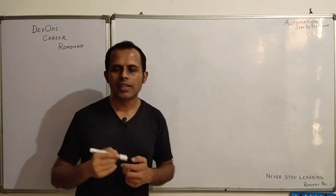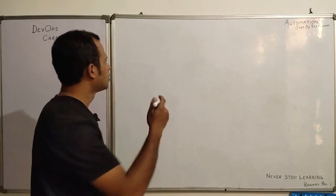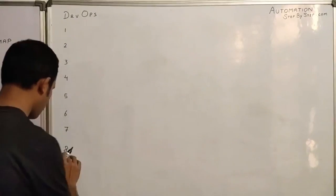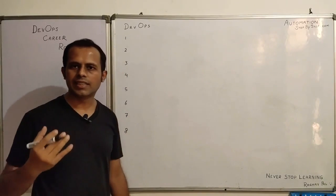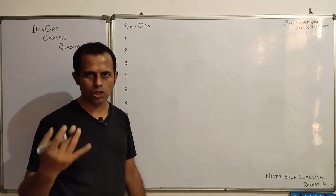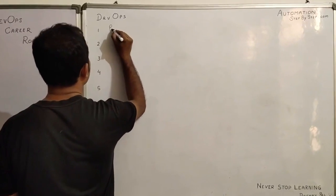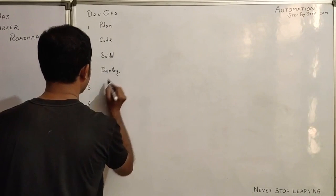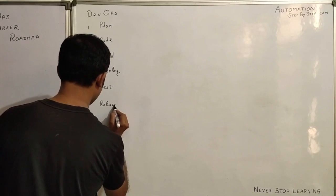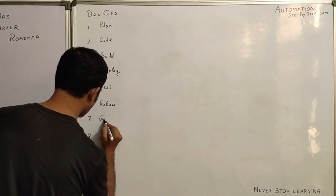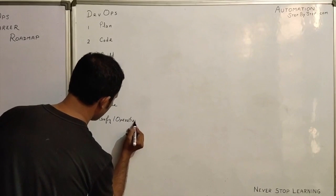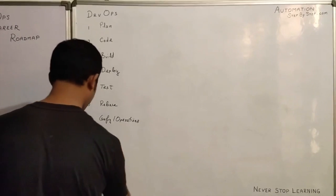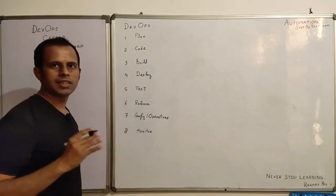Let me first start by listing out all the basic stages in a DevOps process. When we talk about DevOps, we basically have eight stages, eight basic stages in any DevOps process and it starts with planning. So we have plan, code, build, deploy, release, test, configuration management and operations, and finally we have monitoring stage. So these are the basic eight stages.